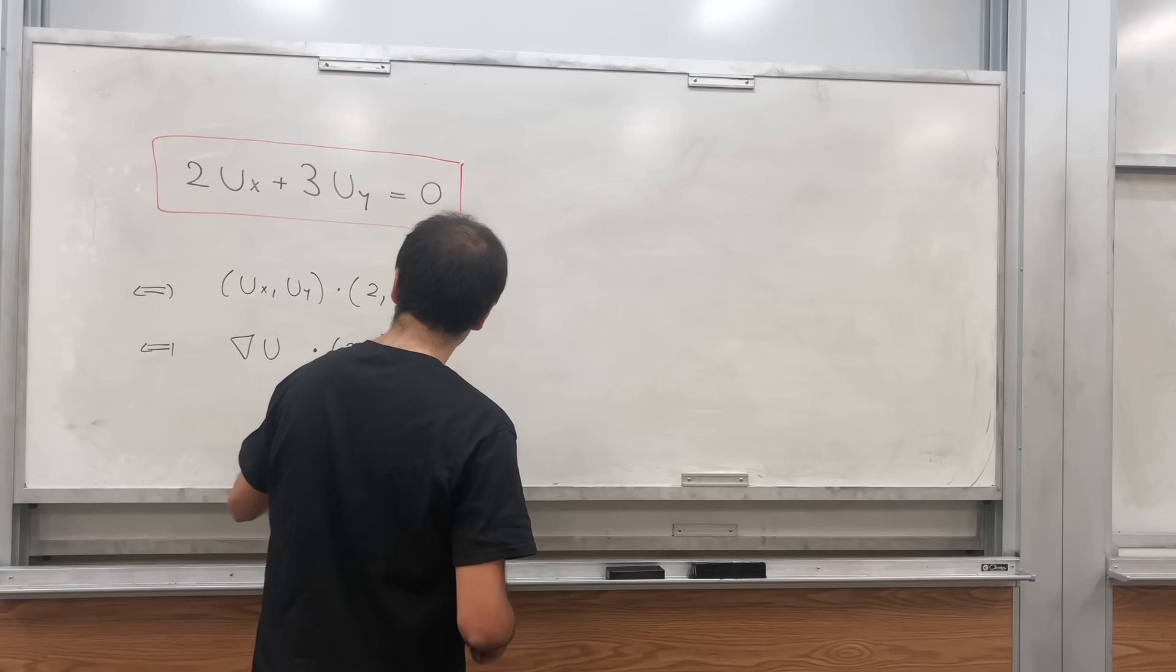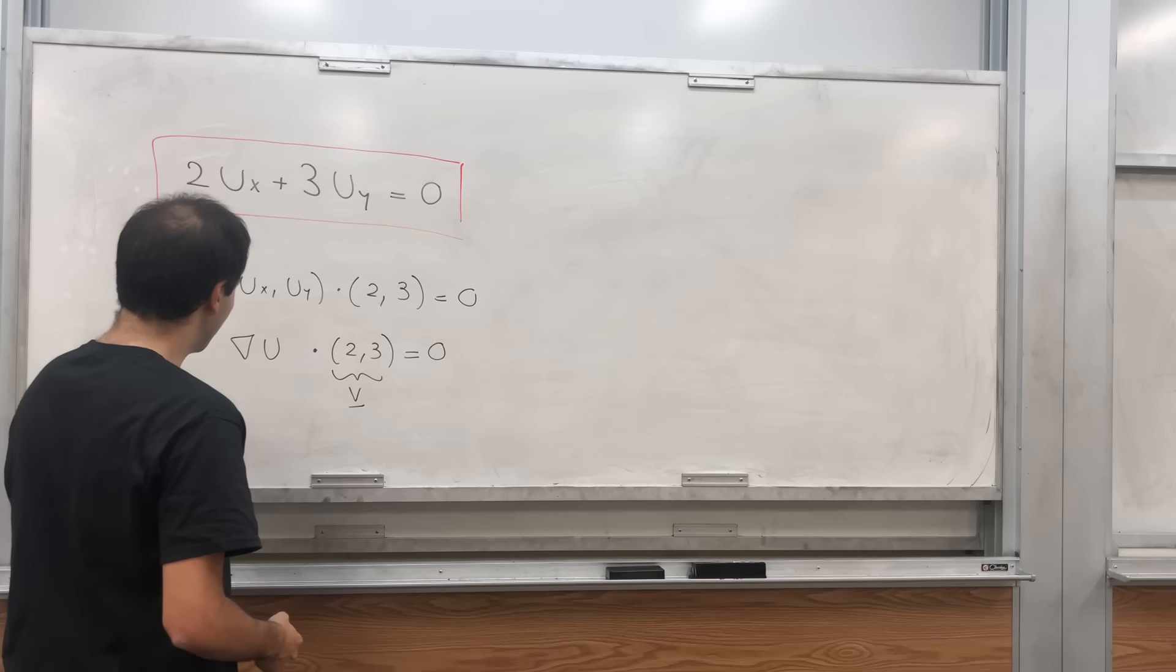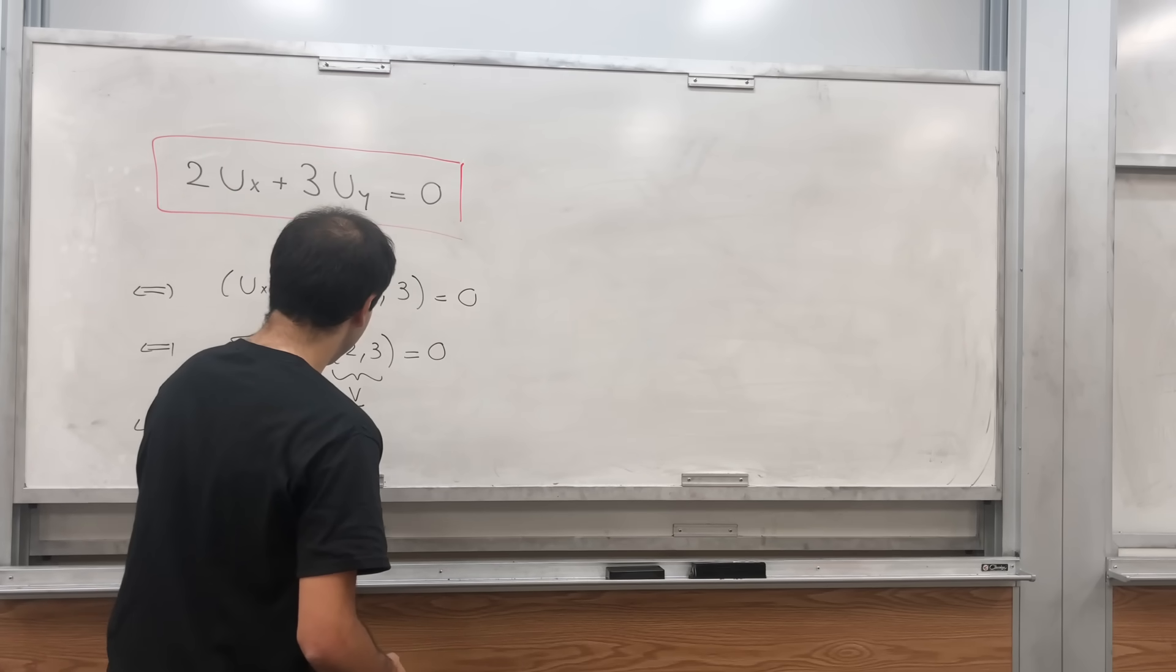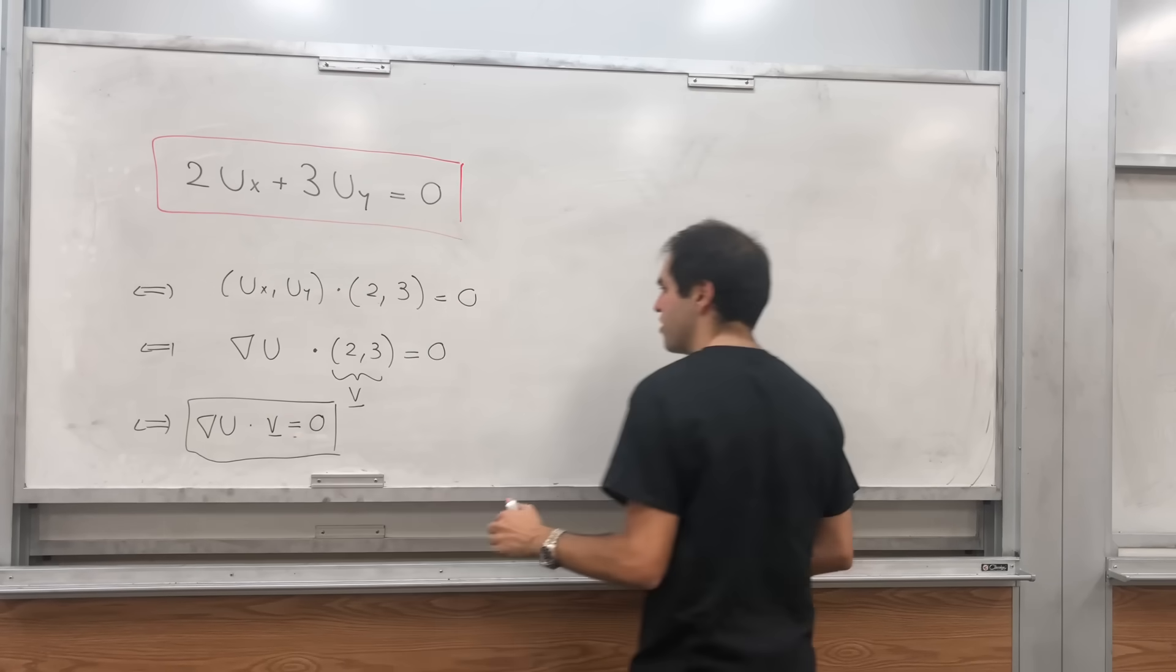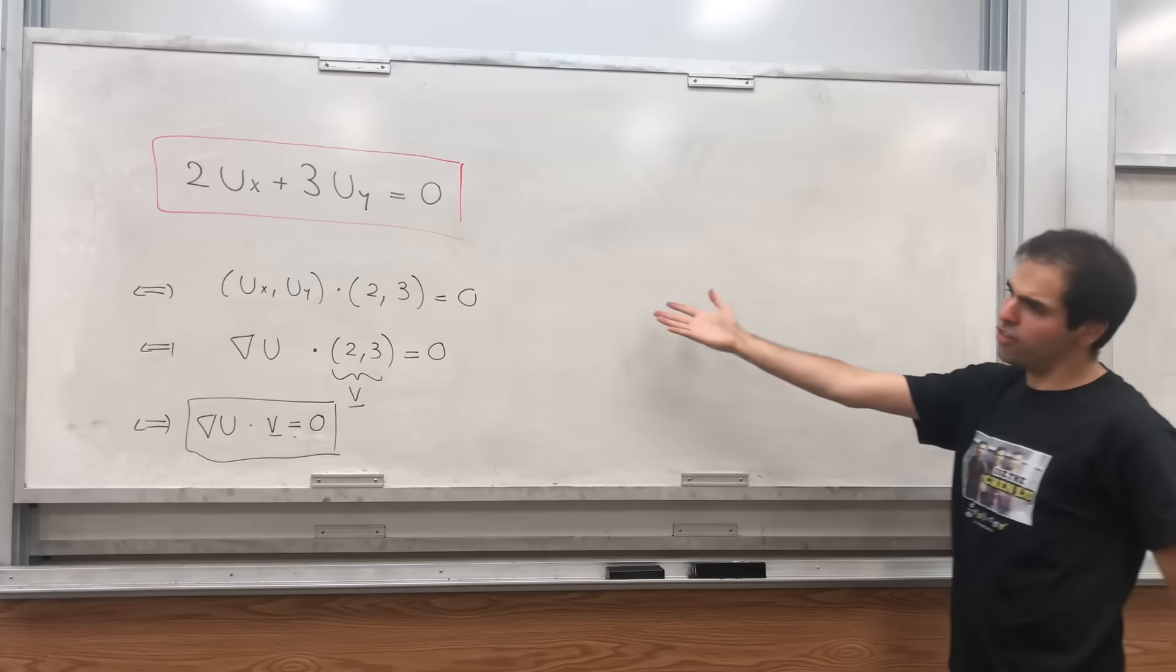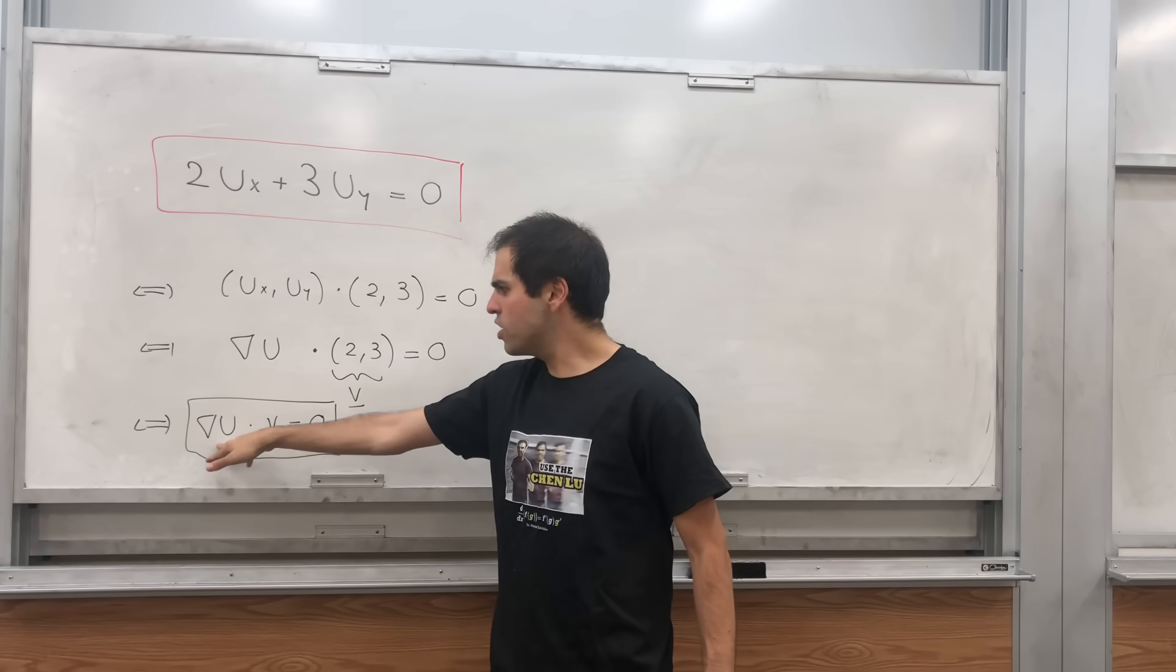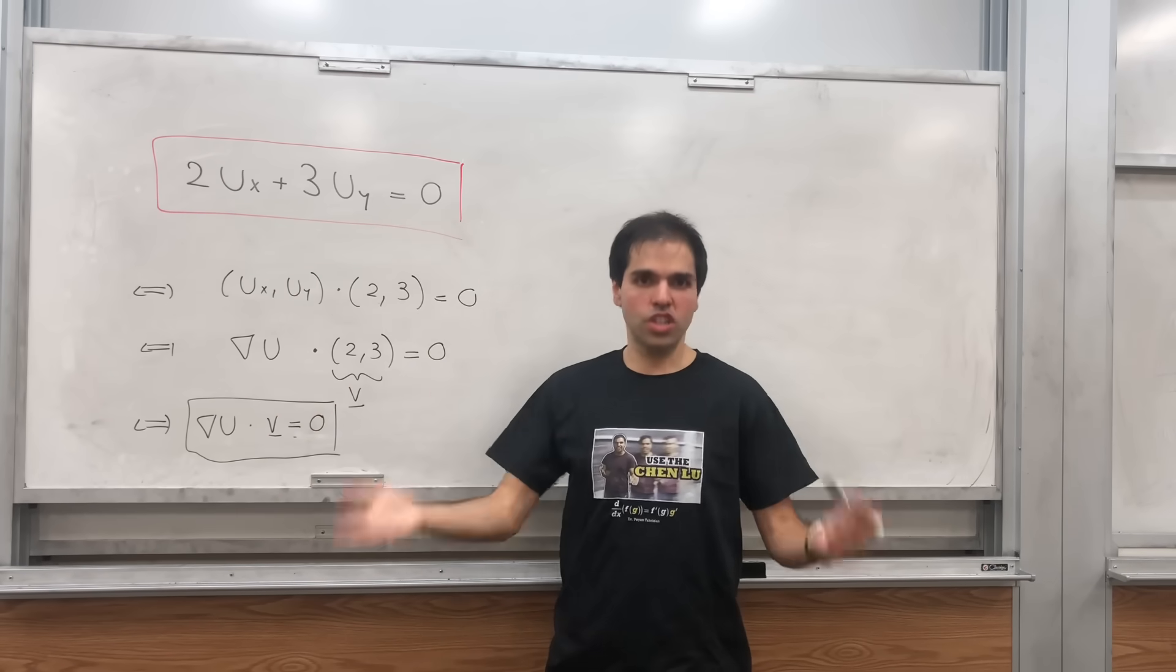And if we call this vector v, this says that the gradient of u dotted with v equals 0, just the scalar 0. And what is this saying? If you remember from multivariable calculus, if you take the gradient dotted with a vector, it means the directional derivative.